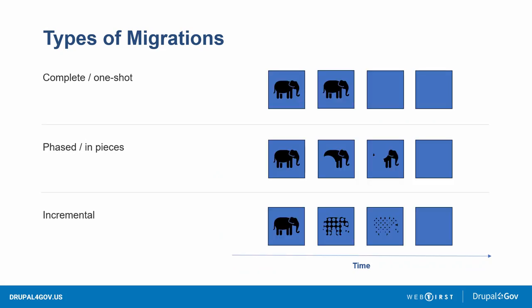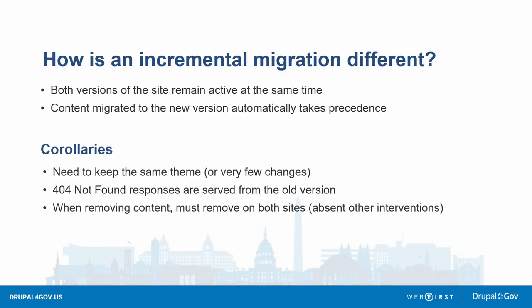So we can eat the whole elephant, we can break it down into big chunks, or maybe bite-sized pieces. What makes an incremental migration different, besides the size of the increments, is that both versions of the site remain active at the same time.